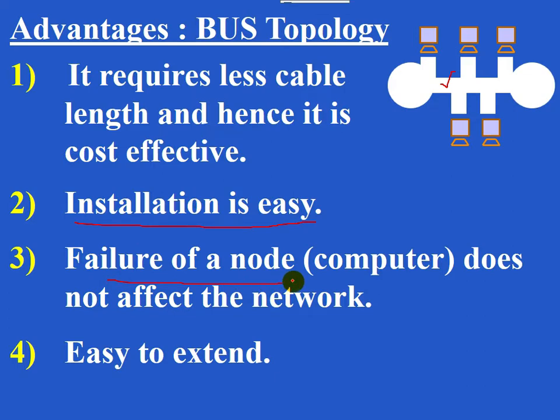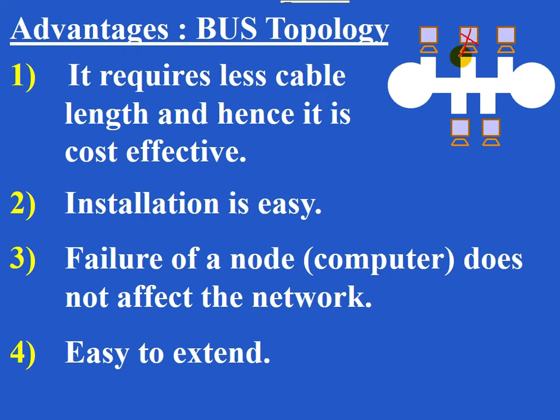Failure of a node does not affect the network. Even if one node in the network fails, the other nodes can still communicate using this network.